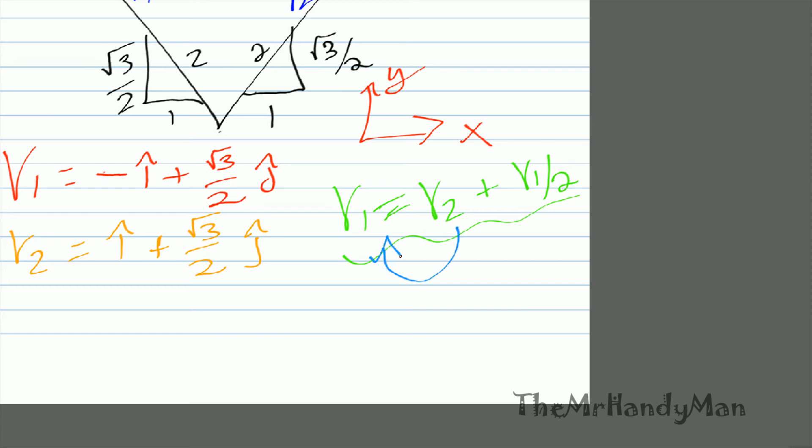So what you can have is you can have v1 minus v2 is equal to v1 relative to 2. You can do this.